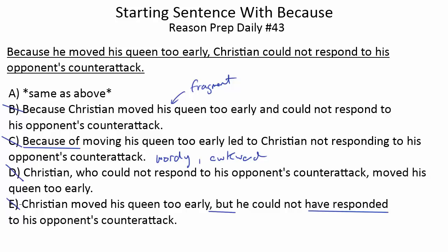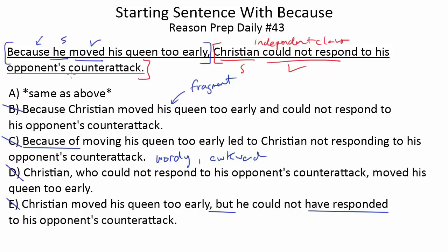So we're left with A. You might ask how come A works — how can we start a sentence with because? Choice A does what we needed B to do. It starts with 'because he moved his queen too early,' which is a dependent clause beginning with the subordinating conjunction 'because.' It has a subject 'he' and a verb 'moved,' so it's a complete clause, but it can't stand on its own. If you just had 'because he moved his queen too early' followed by a period, that would be a fragment. But notice we add an independent clause: 'Christian could not respond to his opponent's counter-attack.' So we have a dependent clause and an independent clause linked with a comma — totally fine. You can start a sentence with 'because,' as well as other subordinating conjunctions like 'since,' 'although,' or 'after.'